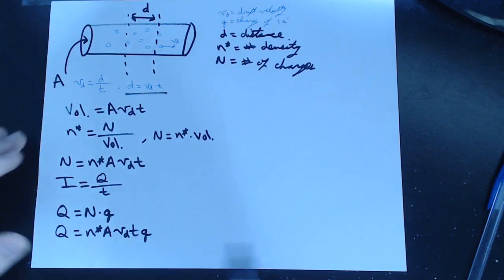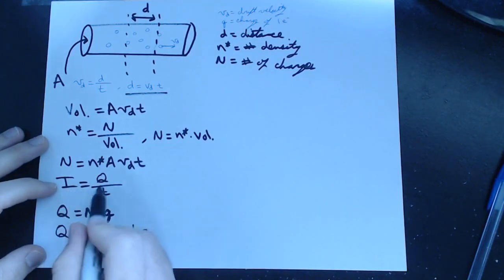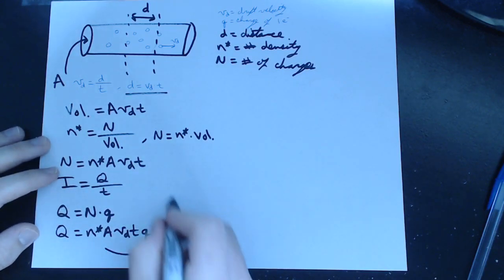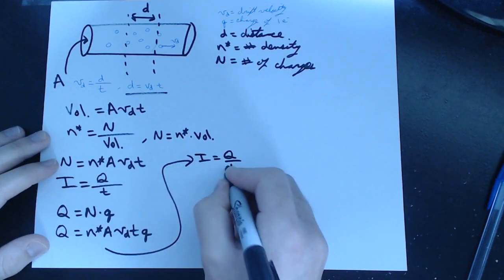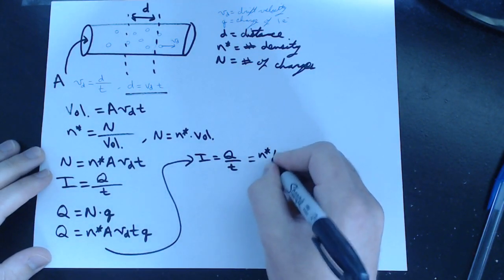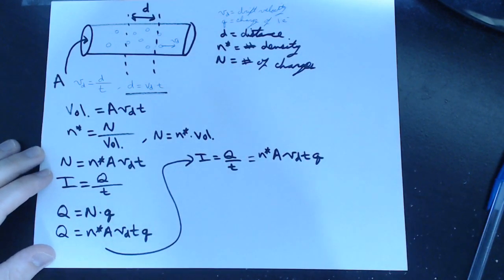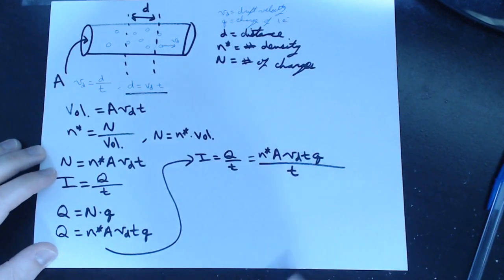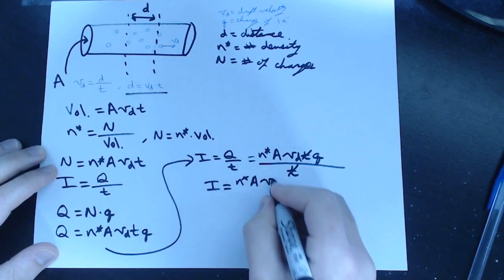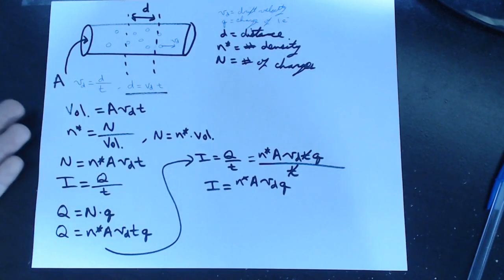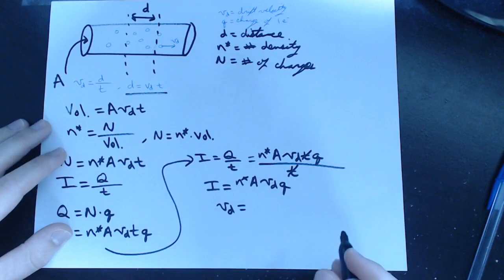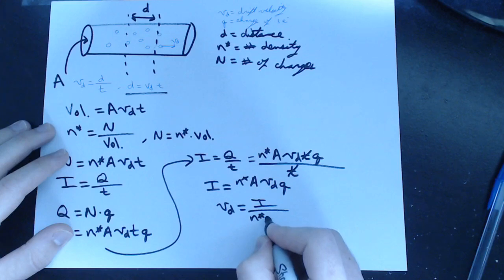This is becoming a rather long expression, but we're almost done. We know current is the amount of charge per unit time, so let's write this as current and divide both sides by time. If I equals Q over T, we take this expression and put it over time: I equals N star times A times V sub D times T times small q, all over time. Time cancels out, and we have the expression for current: I equals N star times A times V sub D times q. Our goal was to find how fast an electron travels, so we solve for V sub D, and we find that V sub D equals I over N star times A times q.